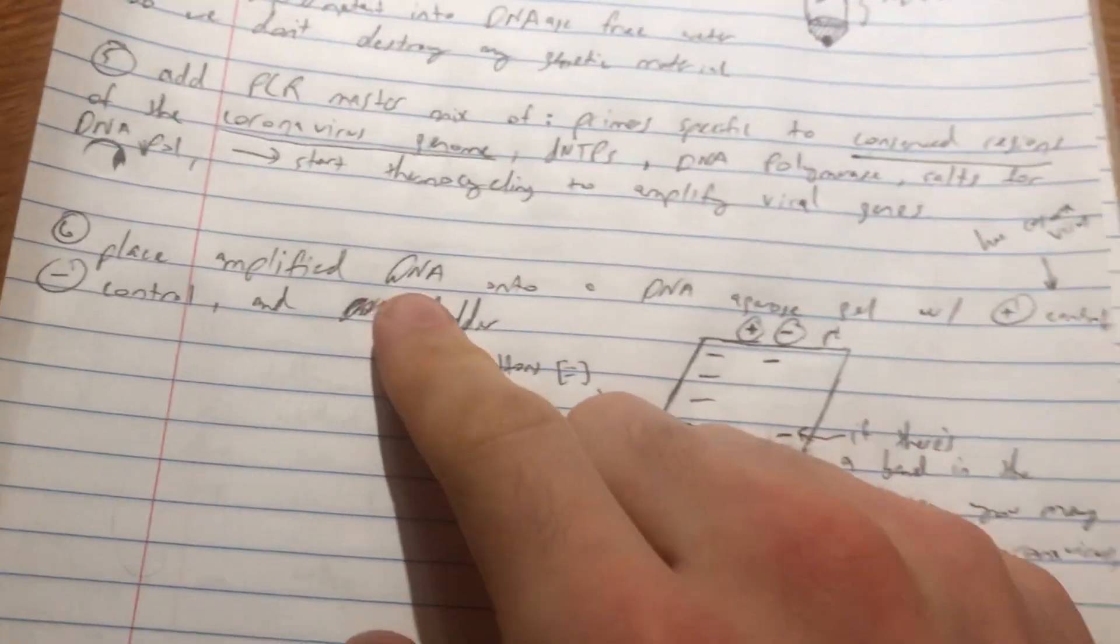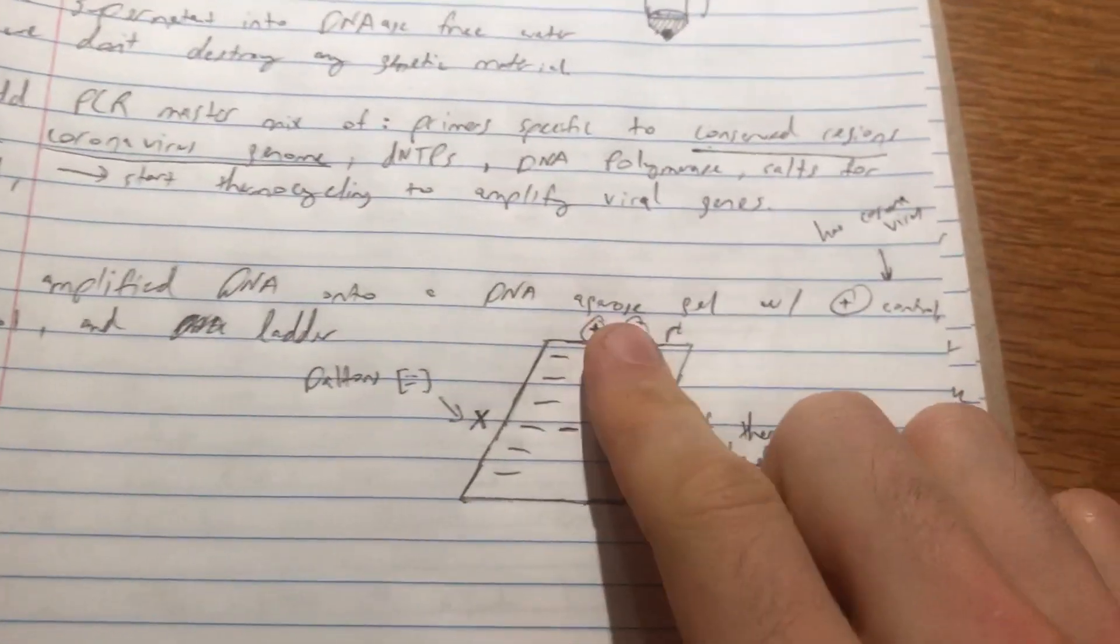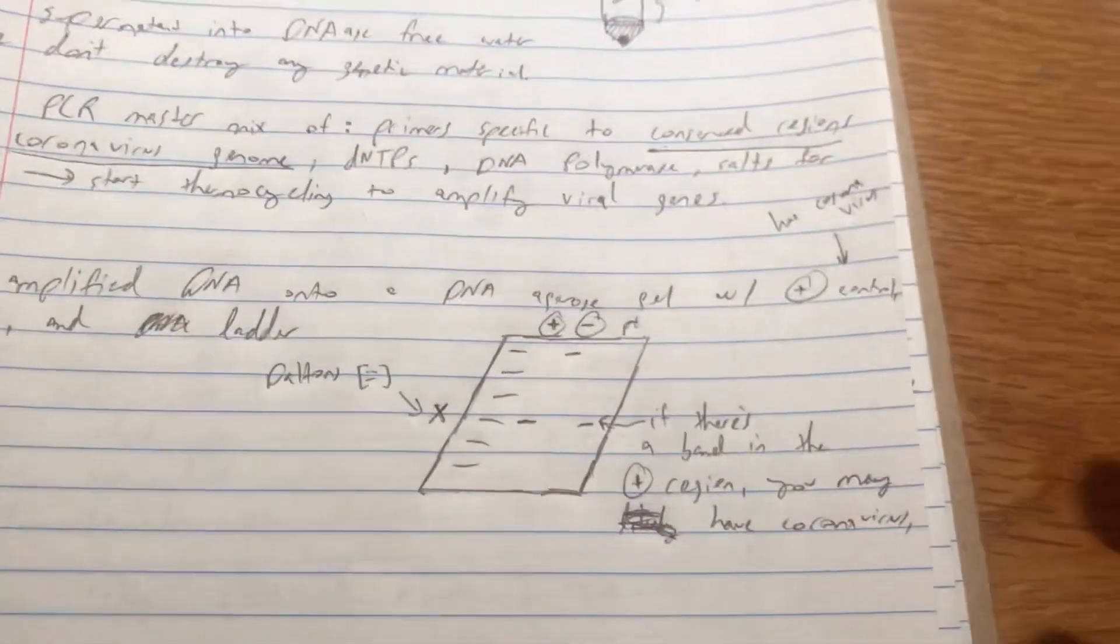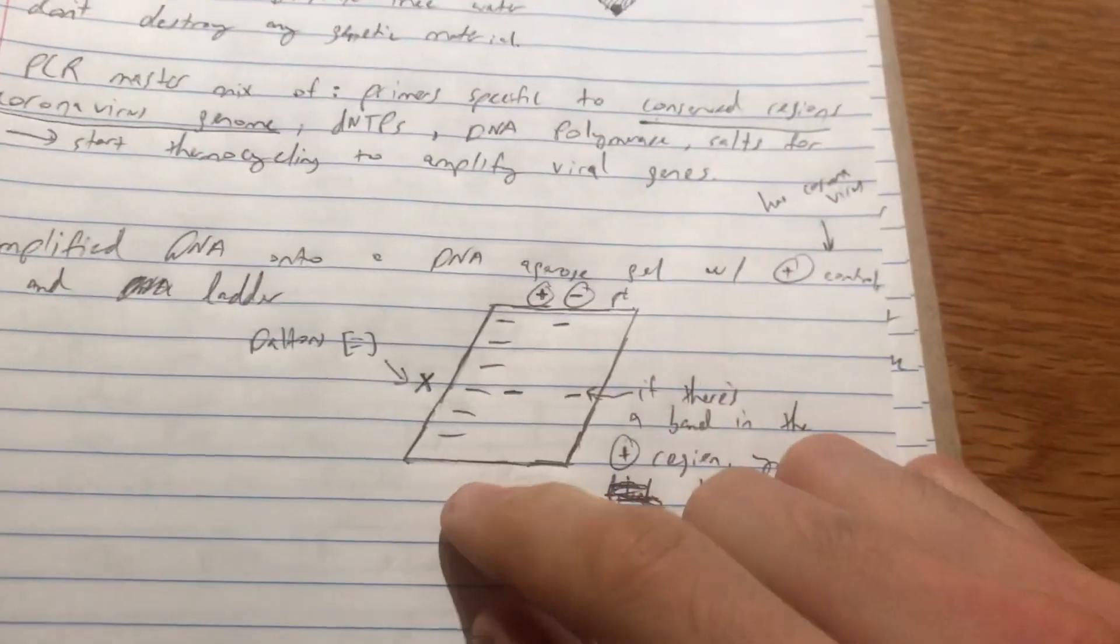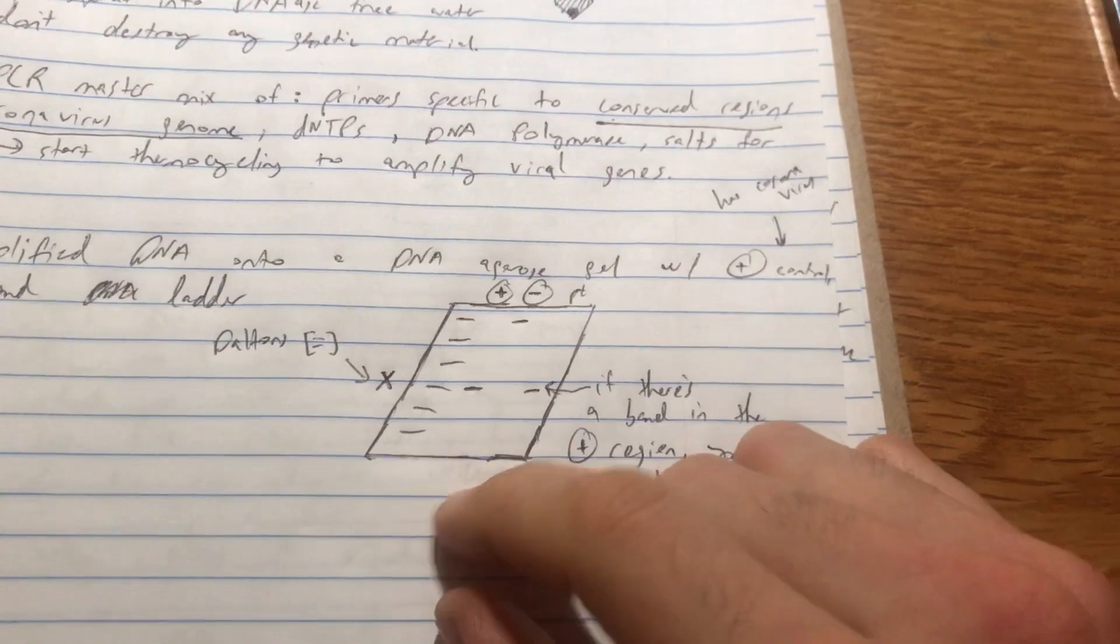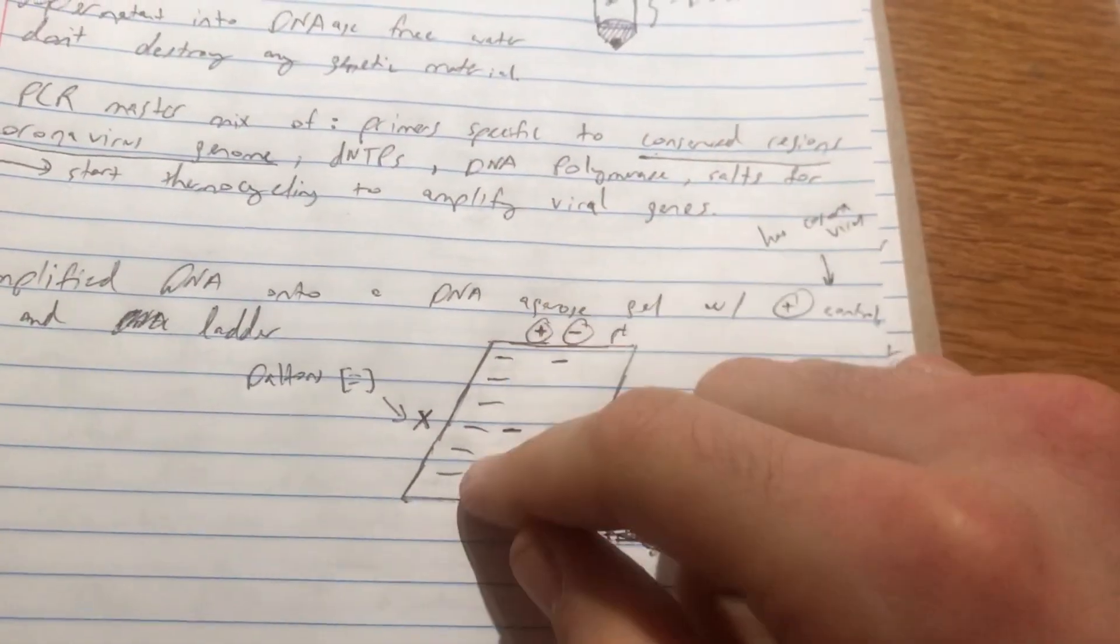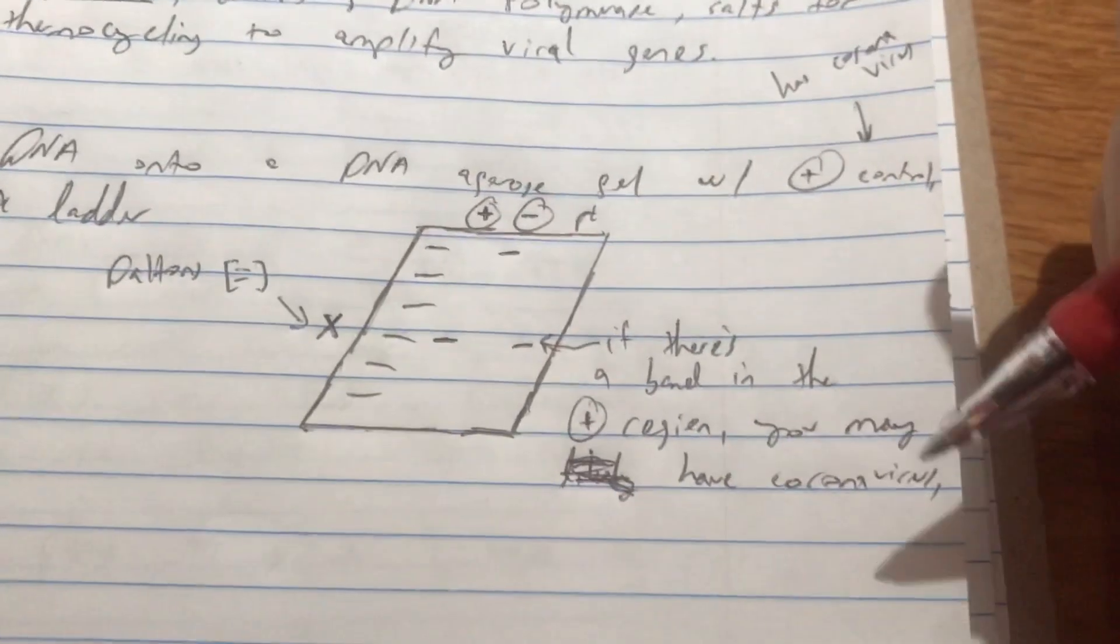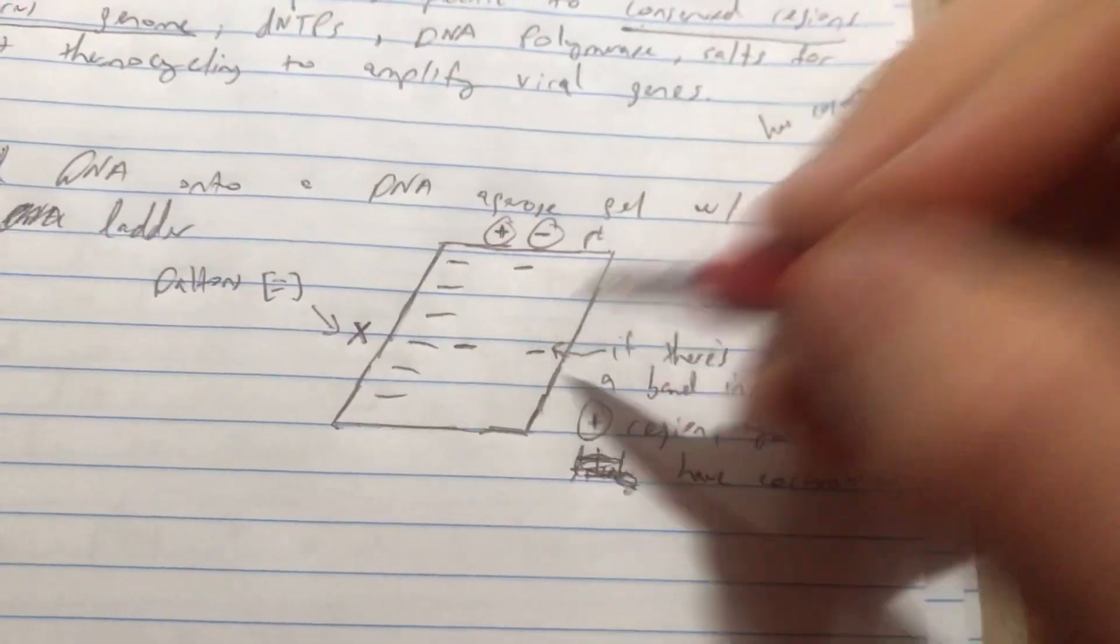is we'll place the amplified genetic material into an agarose gel. So another thing from biology, basically because DNA has a very negative charge to it due to its sugar phosphate backbone, it will be drawn towards a cathode, which is the positive end of the gel. So as we put in a ladder, as well as a positive control, a negative control, and then the actual patient's genetic material that we've just amplified, we will be able to very quickly tell if you do have the coronavirus based on a band that appears.